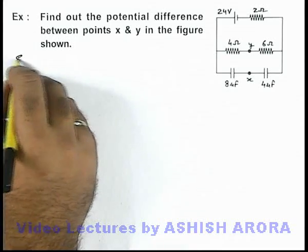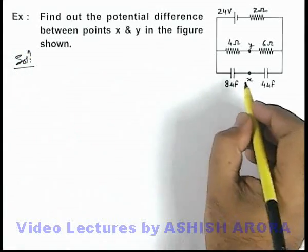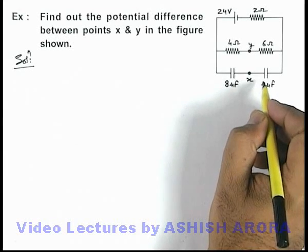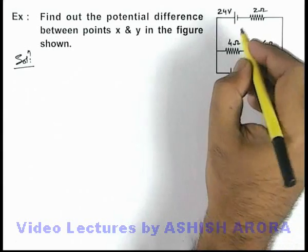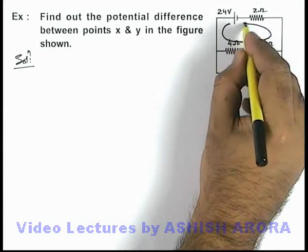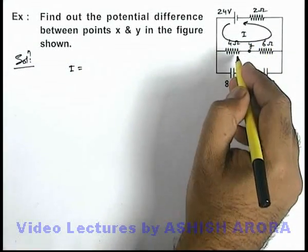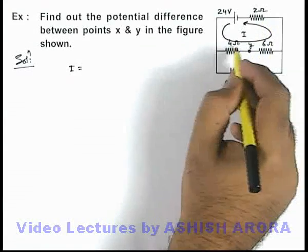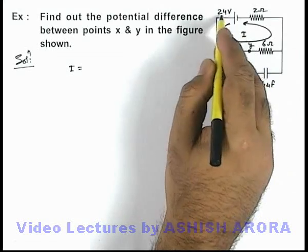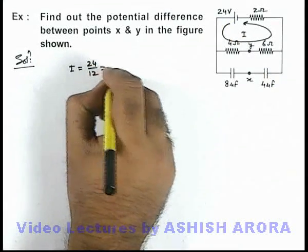In the circuit shown in figure we can see that in steady state, when the capacitors are fully charged, no current will flow through these capacitors. The only current which will flow in this loop is i. The value of i we can directly state as all these resistances are taken in series, so total resistance here is 4 plus 6 plus 2, which is 12 ohm. The voltage source is 24 volts, so the current will be 24 by 12, this is 2 ampere.